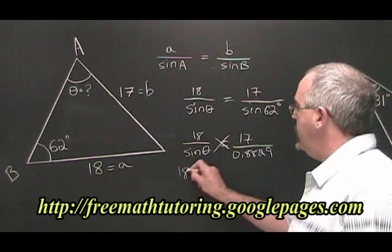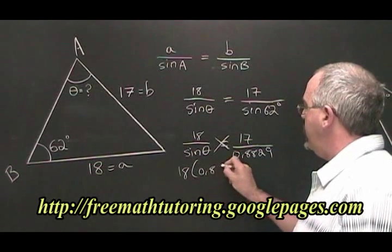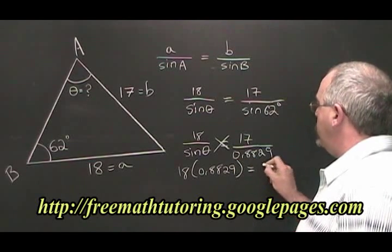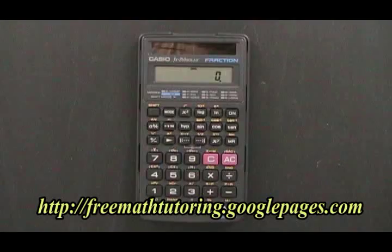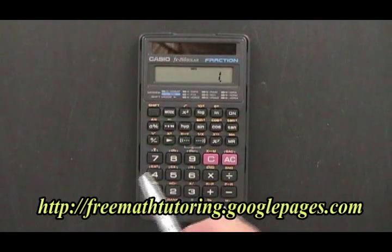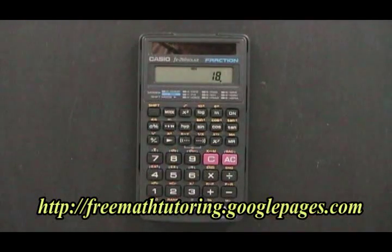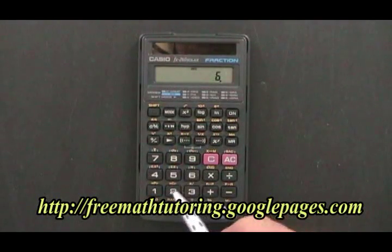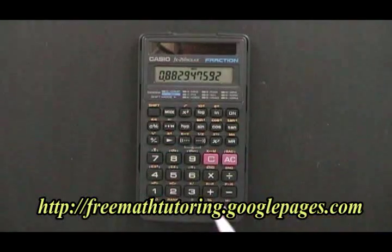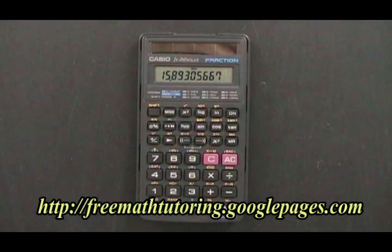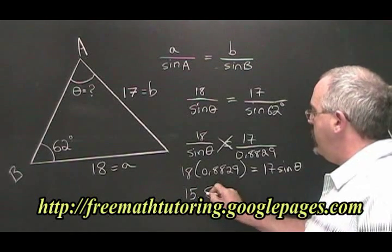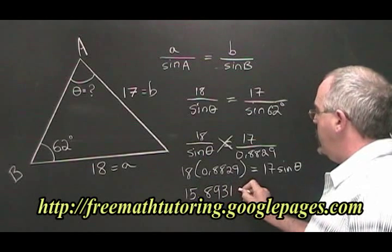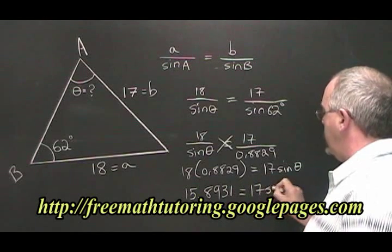18 times 0.8829 is equal to 17 times sine theta. 18 times the sine of 62 is equal to 15.8931. Therefore, 15.8931 is equal to 17 sine theta.